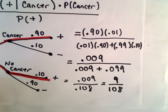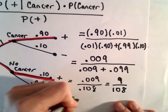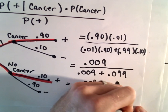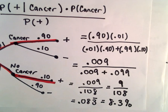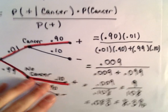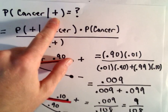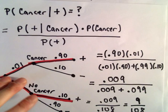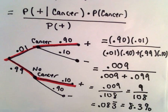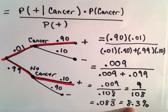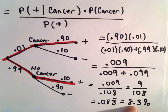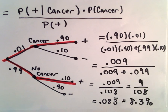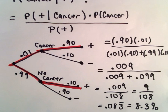9 divided by 108 is 0.0833 repeating — roughly an 8.3% chance. So what does this say? If you go in, take the cancer test, get a positive result, and the doctor brings you in and says you've tested positive and they think you've got cancer — it actually turns out you have a less than 10% chance of actually having cancer. That would certainly make me feel better. You've got less than a 1 in 10 chance of actually having cancer.